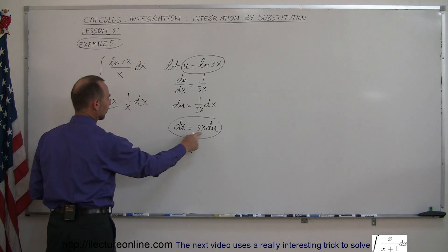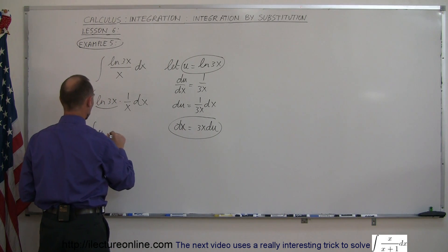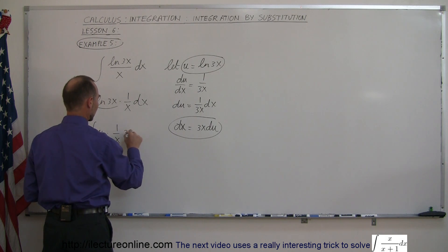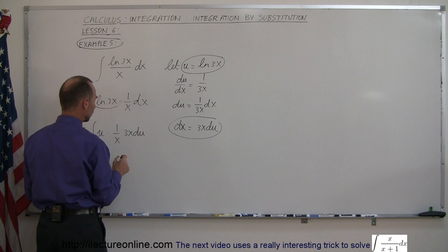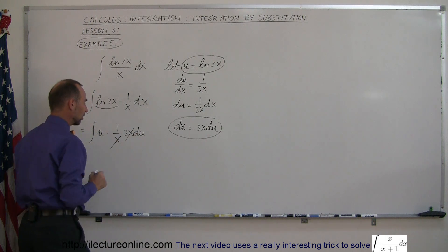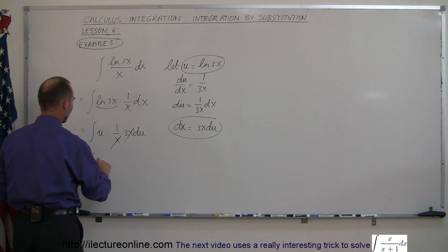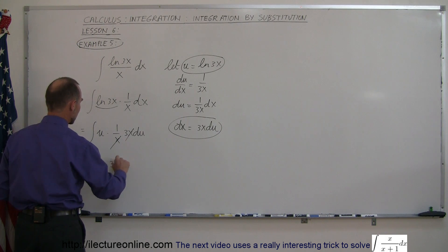And 1 over x dx, let's see here, the dx can be replaced by 3x du, so times 1 over x. And dx is 3x times du. And then you can see that this x and this x cancels out. And you end up with the integral of u times 3 du.